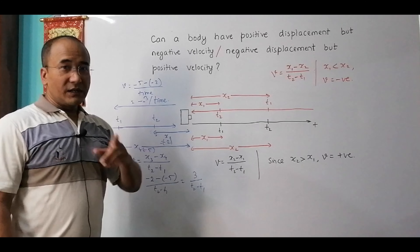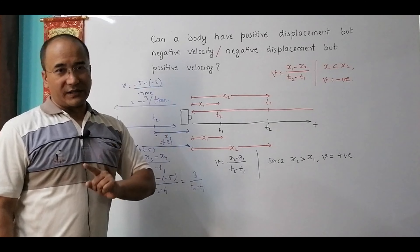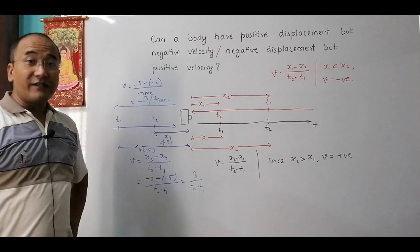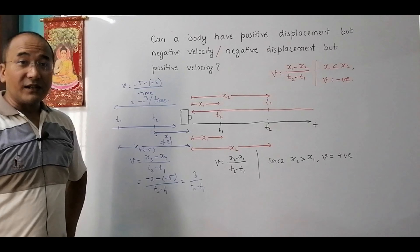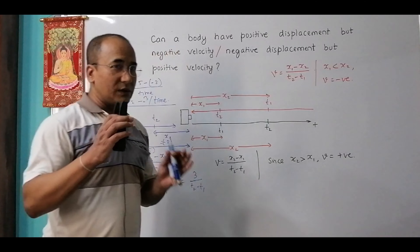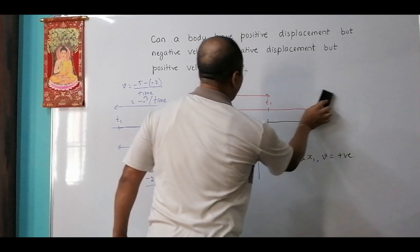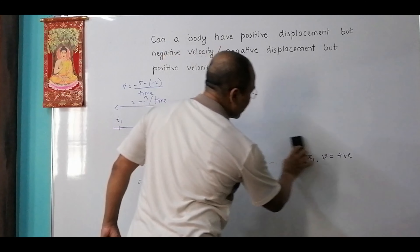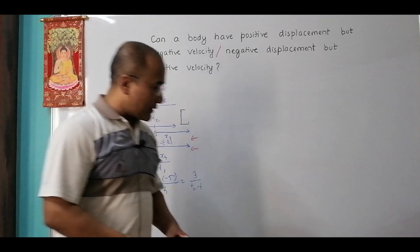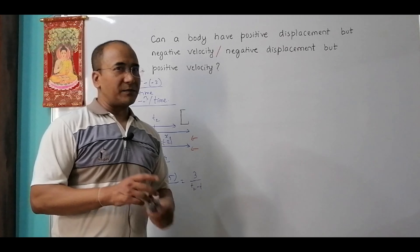Conversely, if the body is going the other way — from x3 = −2 to x4 = −5 — then v = (−5 − (−2)) / time = −3 / time, which is negative. So that confirms every possibility: negative displacement with positive velocity, and negative displacement with negative velocity. In physics, we have to go through every possibility.